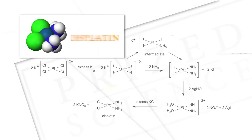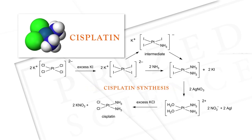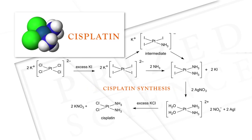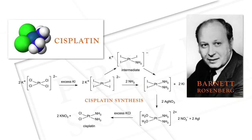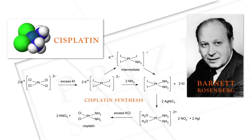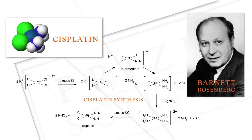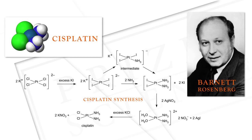The discovery of the biological activity of cisplatin was completely accidental. It wasn't done by me — it was done by Barnett Rosenberg, a biophysicist at Michigan State, working in the mid-60s. And ultimately it became quite valuable for treating cancer in people. More than half the people who get treated with chemotherapy are getting a platinum compound these days.